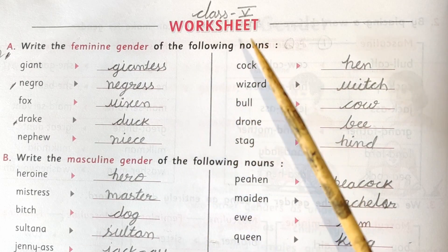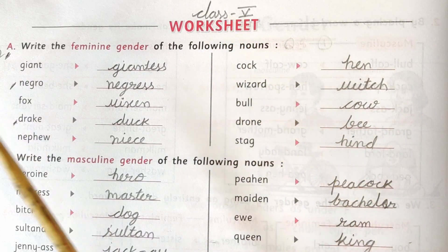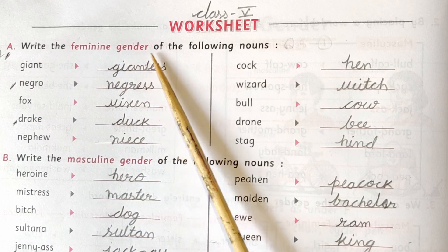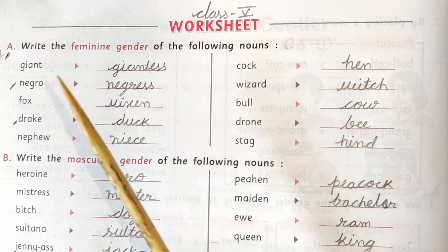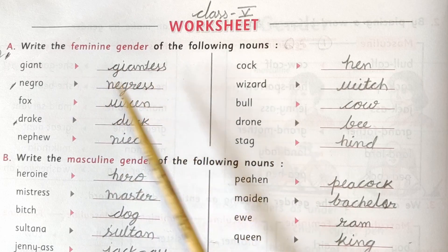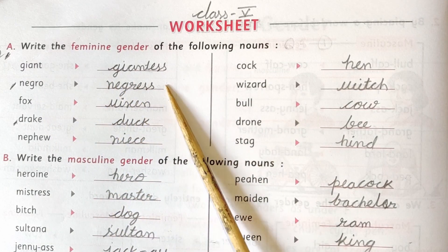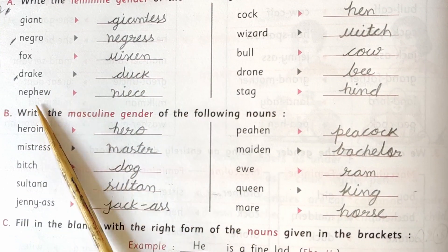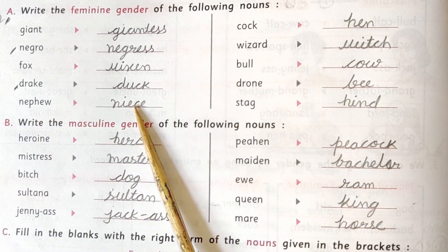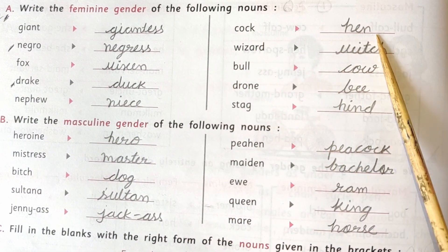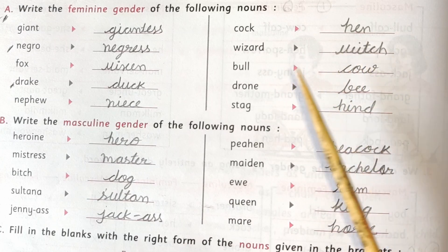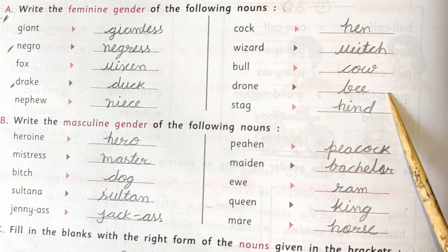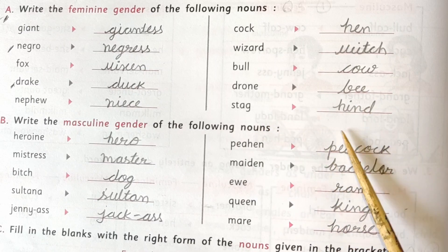Now we will see the class 5 worksheet. Question A: write the feminine gender of the following nouns — joint/jointess, negro/negress, fox/vixen, drake/duck, nephew/niece, cock/hen, wizard/witch, bull/cow, drone/bee, stag/hind.